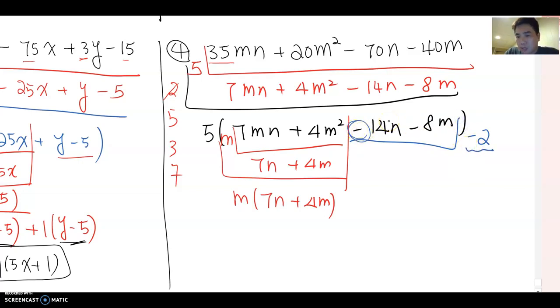No more common factor, so cover by the parentheses and make multiplication. Then this will become negative two times 7n plus 4m. Do you see any more common factor?